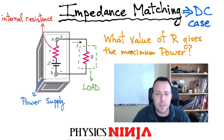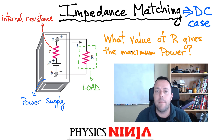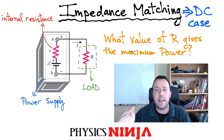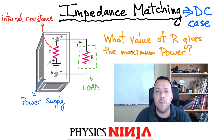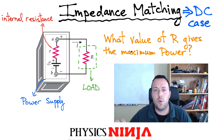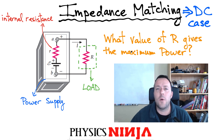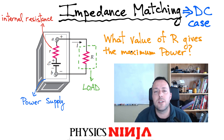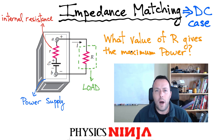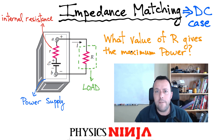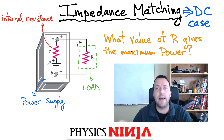I have a power supply here — just a regular old battery that produces a constant EMF. The battery itself has some internal resistance, denoted by lowercase r. I'm going to connect that to a load with resistance given by uppercase R. The question is: what value of the load resistance gives the maximum power dissipated by that resistance?